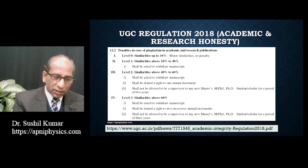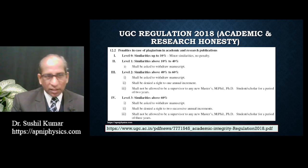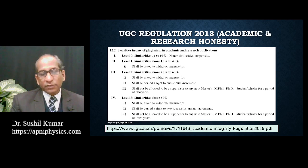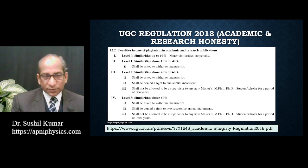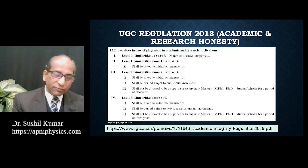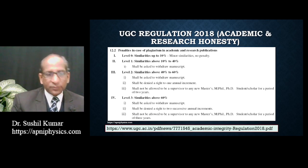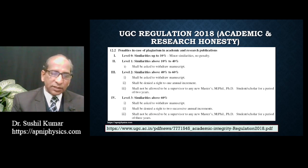If similarity index lies between 10 and 40 percent, one can be asked to withdraw the content — whether it is an article, review article, report, or book chapter. If similarity index lies between 40 and 60 percent, the author shall be asked to withdraw the manuscript, denied the right to one annual increment, and not allowed to be a supervisor to any new Master's or PhD student for a period of two years. Above 60 percent carries even stricter penalties.